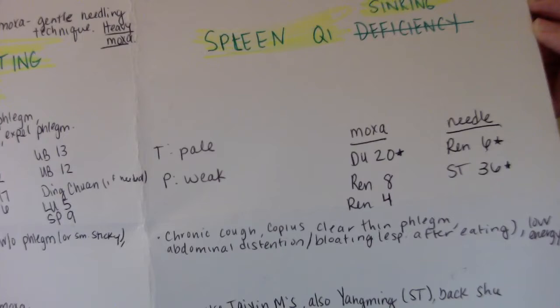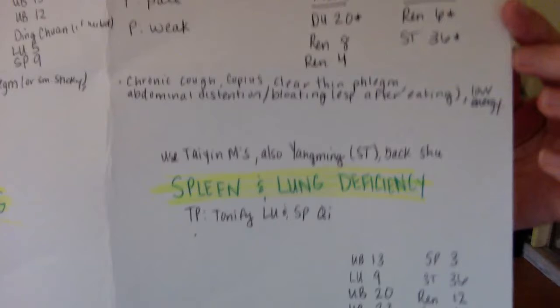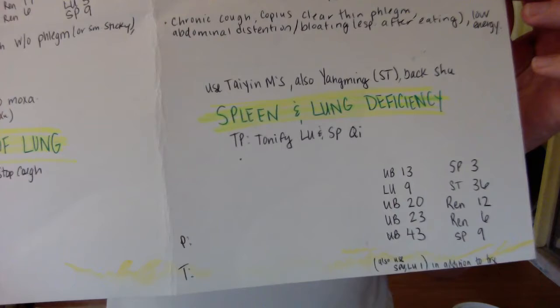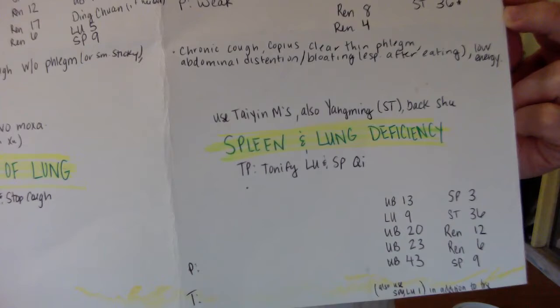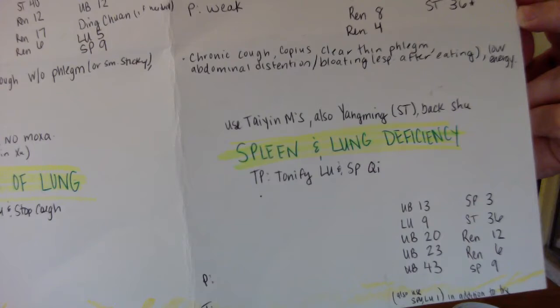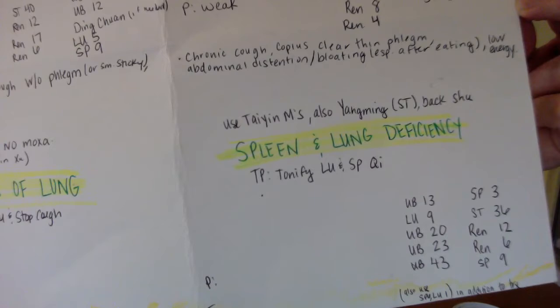Spleen and lung deficiency: chronic cough, copious clear thin phlegm, abdominal distension and bloating especially after eating, low energy. Treatment principle: tonify lung and spleen chi by using the tai-yin meridians, also yangming, the stomach back shoe.